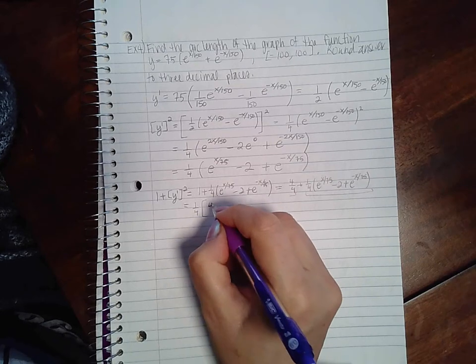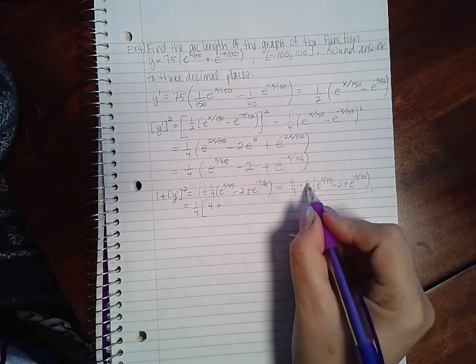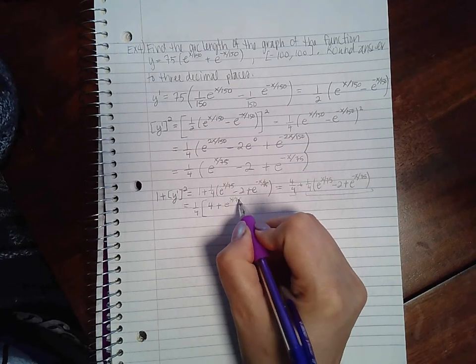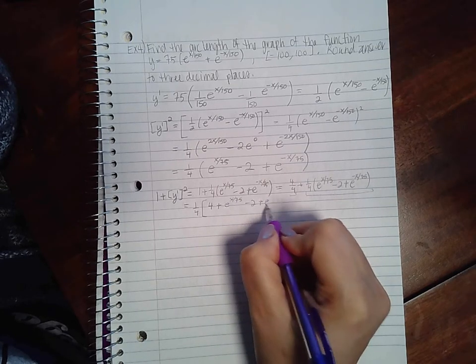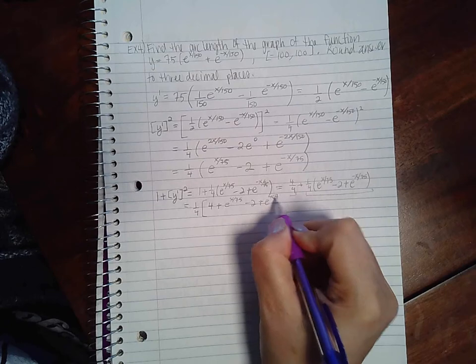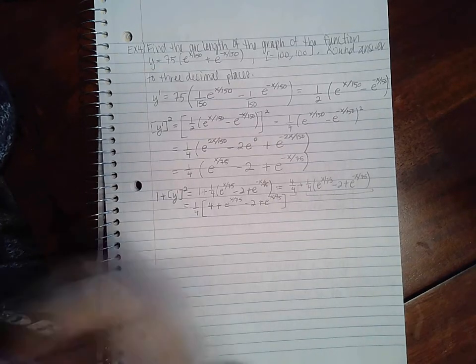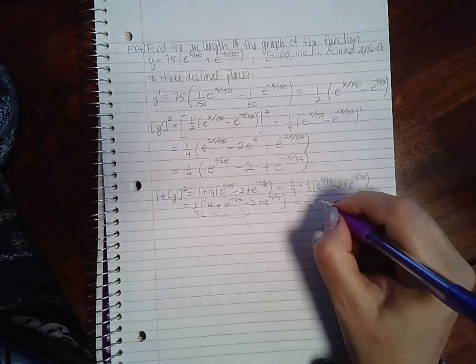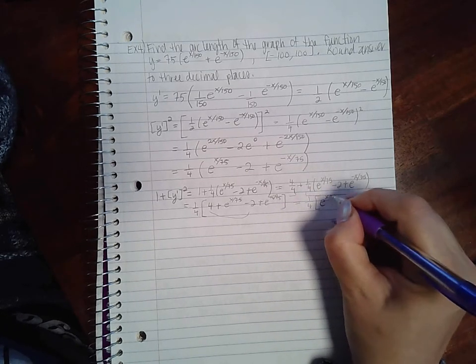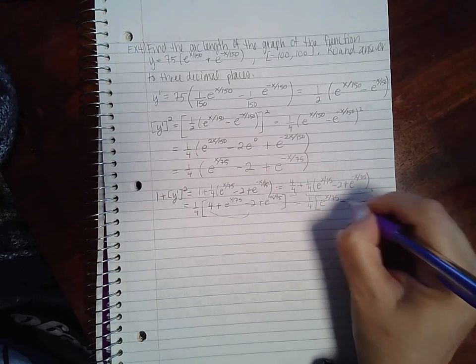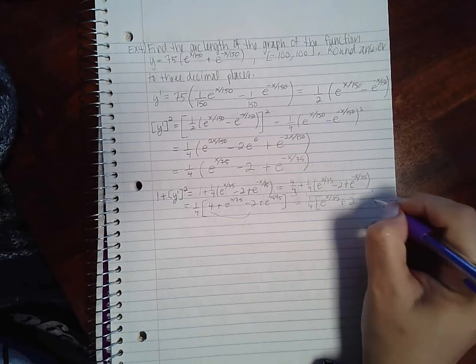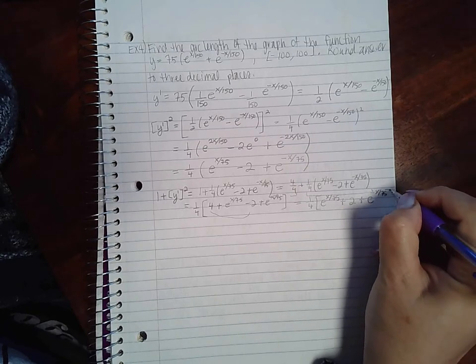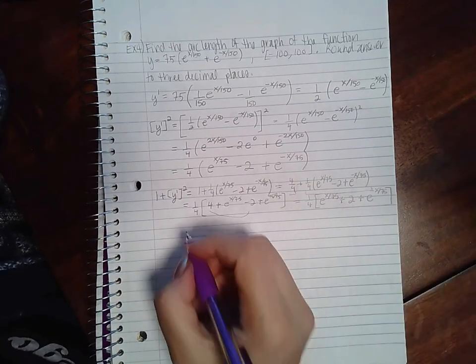I would get 1 fourth times all this stuff which is just going to be those terms exactly as they are. And then these two terms combined will give me positive 2. And then I can factor that.